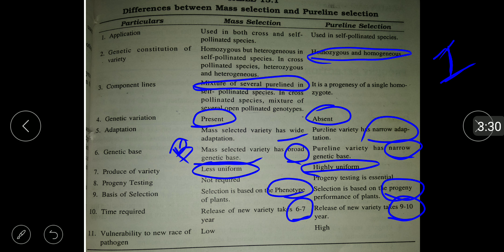Due to the longer duration, the vulnerability to pest and disease attack is low in mass selection compared to pure lines. In mass selection, variability is present — the population is homozygous but heterogeneous — so some strains may resist disease even if others are attacked. In pure lines, if one strain is attacked by a pest or disease, the whole plot can be destroyed since all plants have the same genetic makeup. Mass selection therefore has less chance of total crop loss from pest and disease.